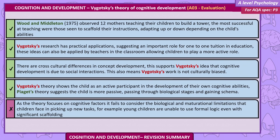Evaluations. Wood and Middleton (1975) observed 12 mothers teaching their children to build a tower. The most successful at teaching were those seen to scaffold their instructions, adapting up or down depending on the child's abilities.